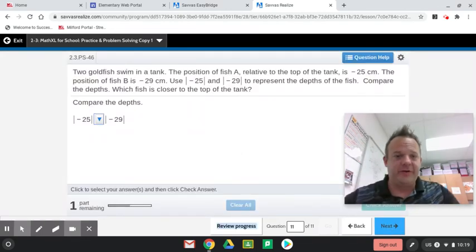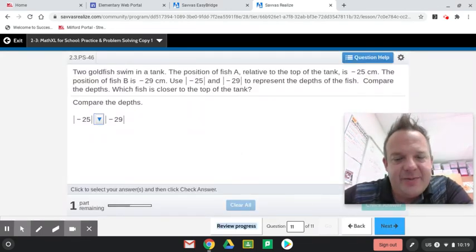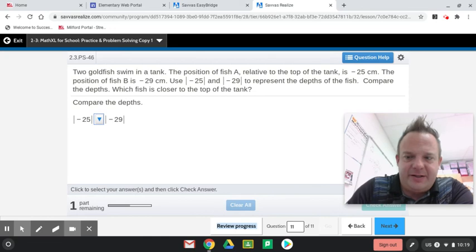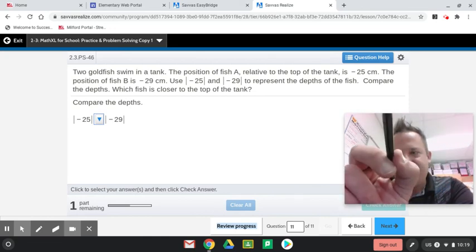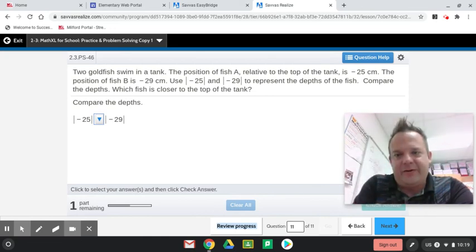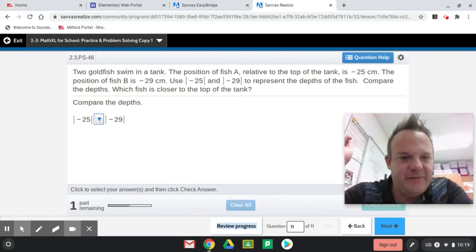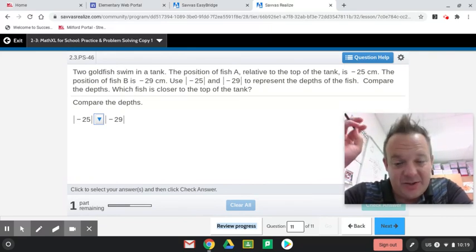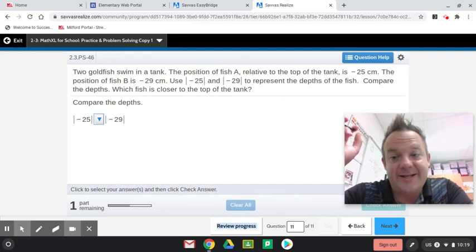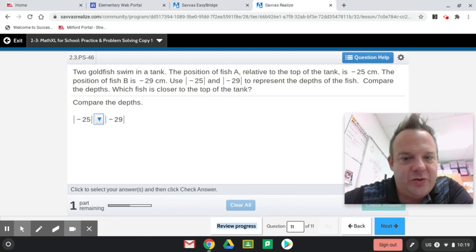Last one. Two goldfish swim in a tank. The position of fish A relative to the top of the tank is negative 25 centimeters. So, that means, like, here's the top of the tank and it's down negative 25 centimeters where the water level appears zero. The position of fish B is negative 29 centimeters. So, use the absolute value of negative 25 and the absolute value of negative 29 to represent the depths of the fish. Compare the depths. Which fish is closer to the top of the tank?